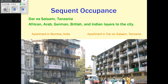An example shown is Dar es Salaam: on the left is an apartment complex in Mumbai, India, and on the right is an apartment complex in Dar es Salaam, Tanzania. Because there was Indian influence in Tanzania, the Indian immigrants brought the architectural style they were used to in Mumbai with them, and that's what these images illustrate.